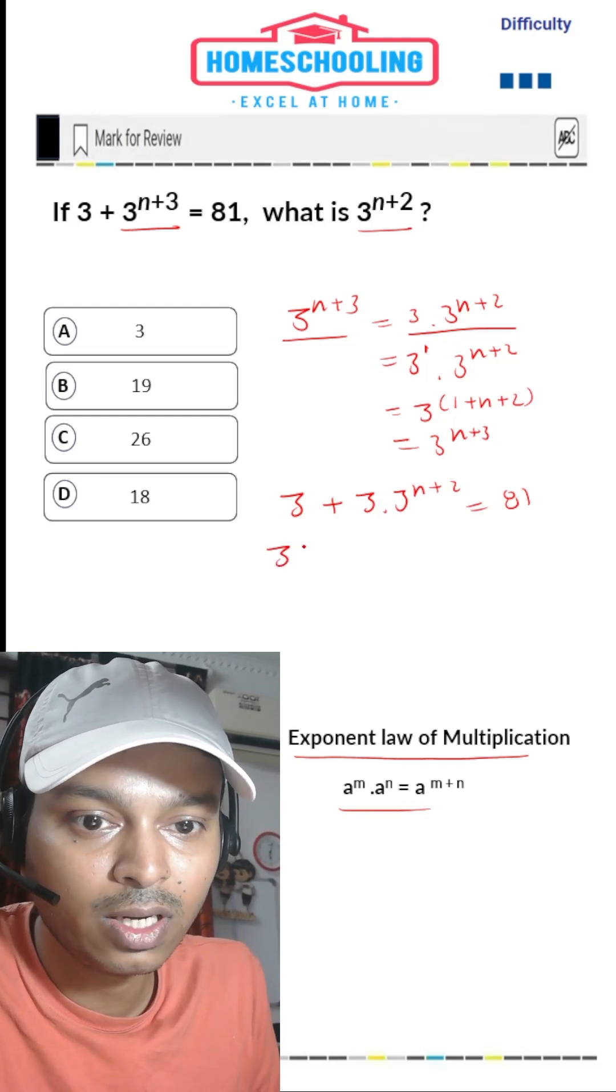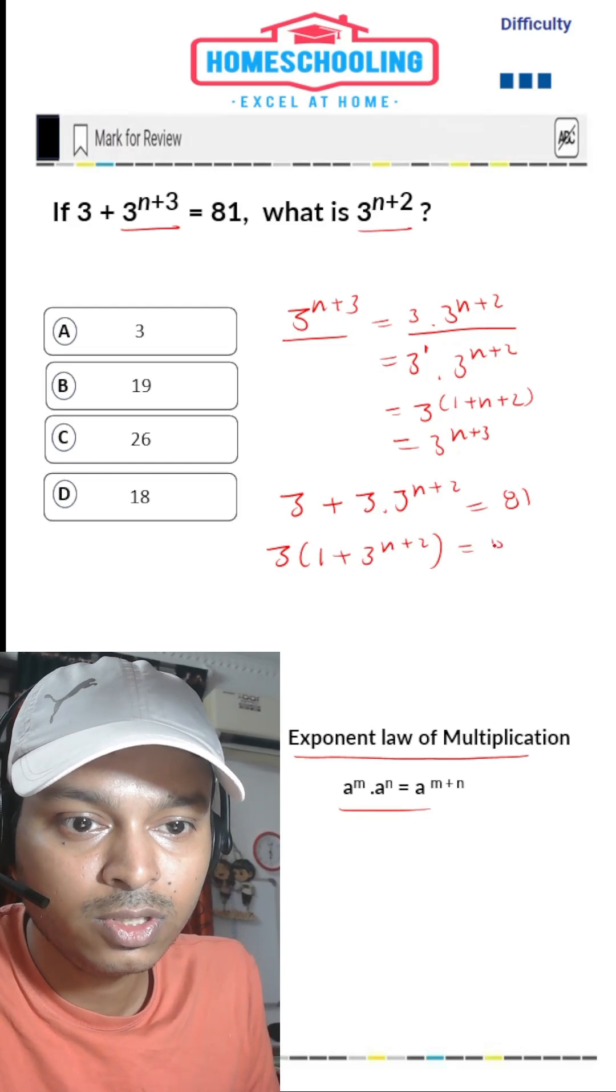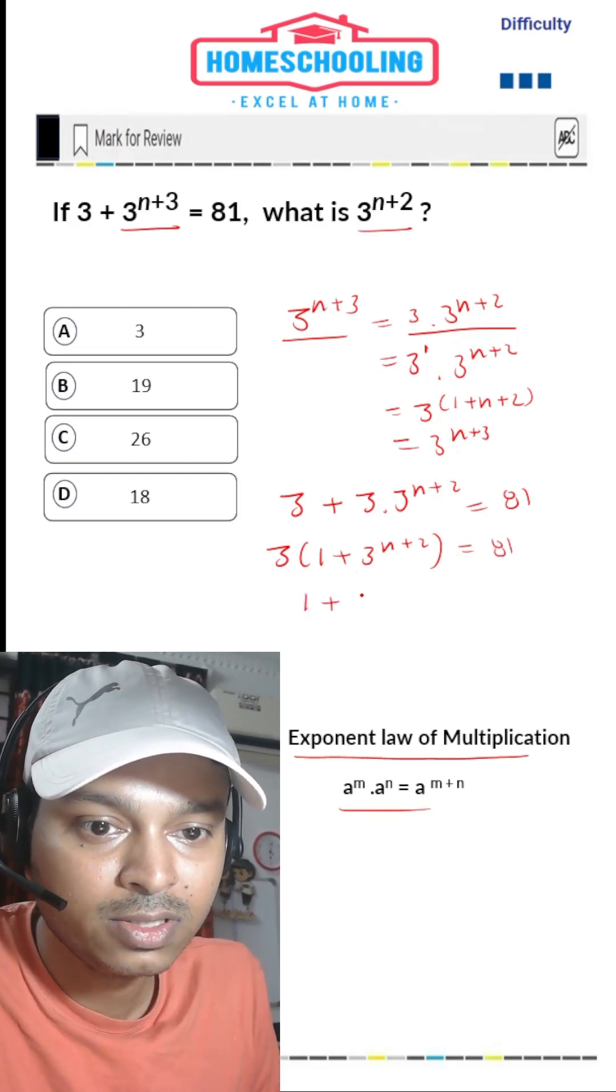We can take 3 common outside. So 1 plus 3^(n+2) equals 81. We'll divide both sides by 3. So 1 plus 3^(n+2) equals 81 divided by 3, which is 27.